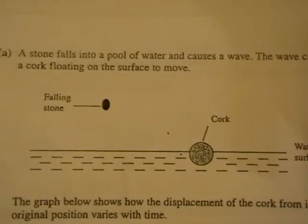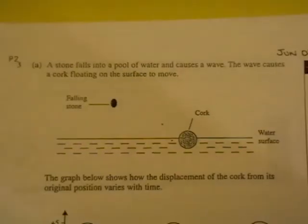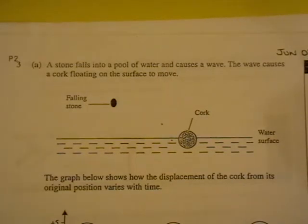It says a stone falls into a pool of water and causes a wave. The wave causes a cork floating on the surface to move. So this is June 08 paper 2. The graph below shows how the displacement of the cork from its original position varies with time.